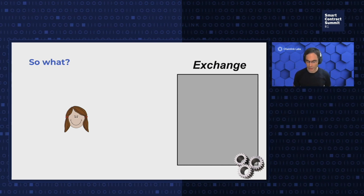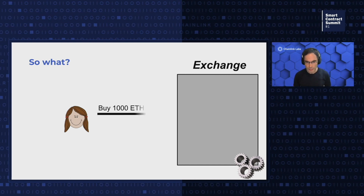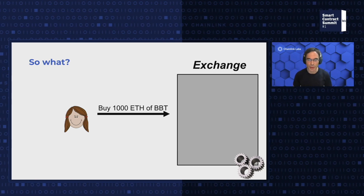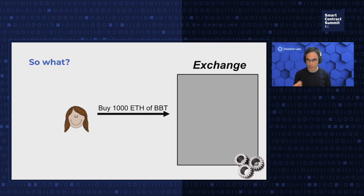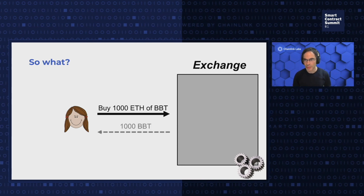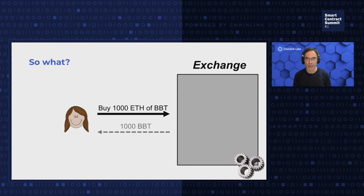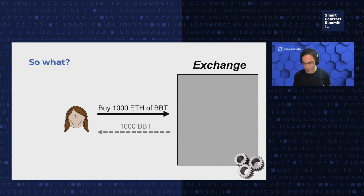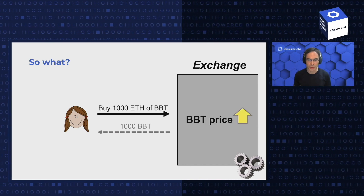Suppose that Alice wants to buy a token on an exchange — say an automated market maker. For example, she'd like to buy some Bob's Bubble Token, or BBT, for ETH. She submits a transaction to the mempool, that works its way on-chain, and she obtains some quantity of BBT. For instance, she may obtain a price of 1 ETH per BBT. And if the AMM parameters are right, her transaction will cause the price of BBT to rise.